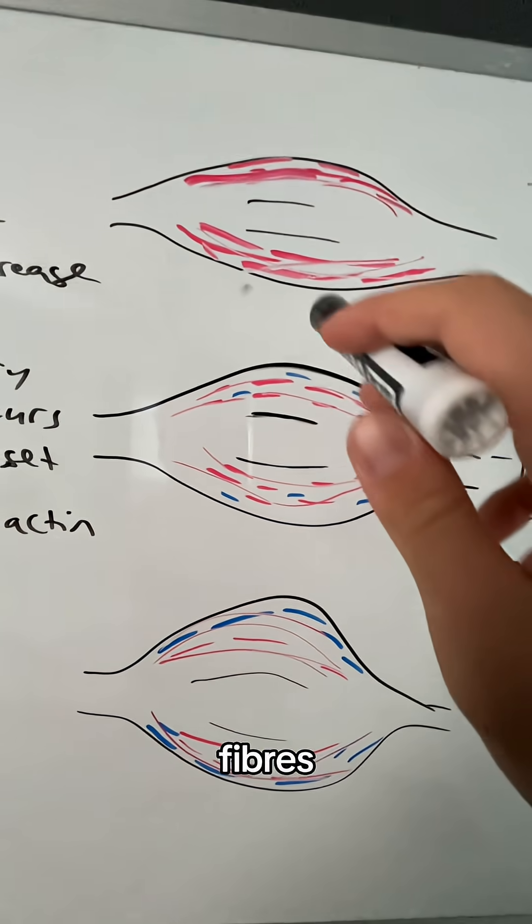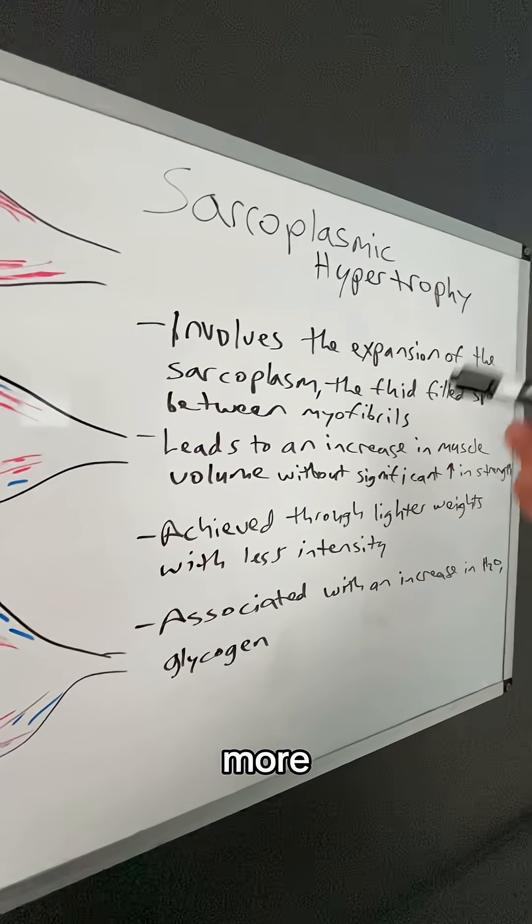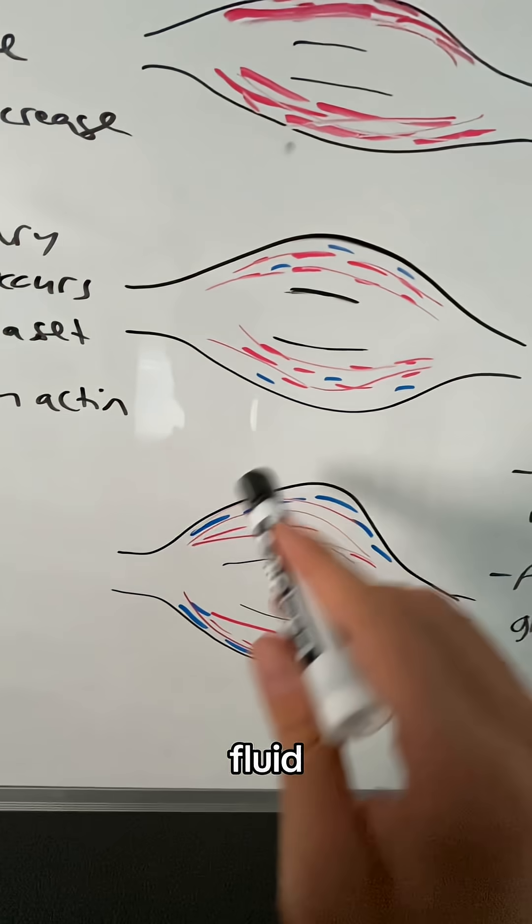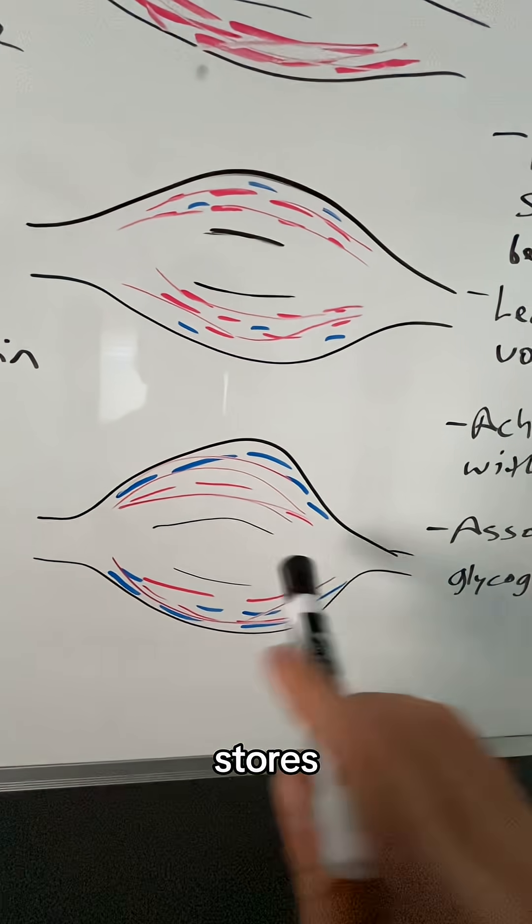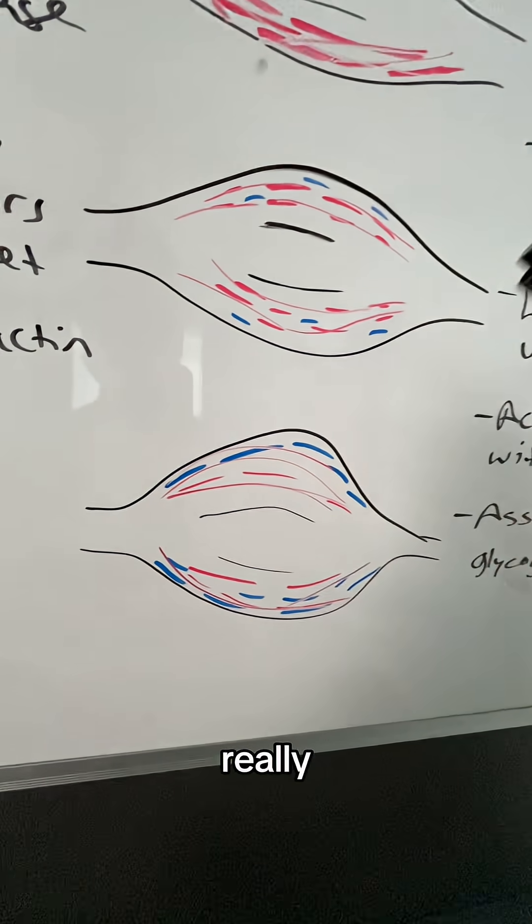So if you see here, there's space in between the fibers. And as you get more sarcoplasmic hypertrophy, the fluid increases, more blood flow, more glycogen stores increase. It swells up and creates a really nice pump, making the muscle appear larger.